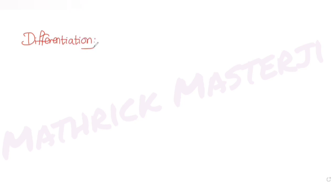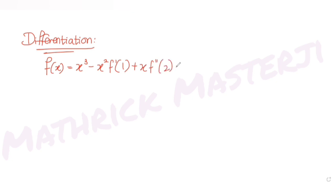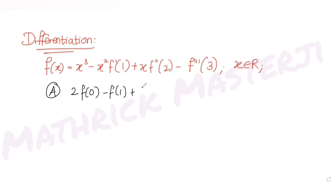The question tells us f(x) = x³ − x²·f'(1) + x·f''(2) − f'''(3), where x belongs to all real numbers. The first answer choice says 2·f(0) − f(1) + f(3) = f(2).